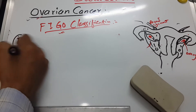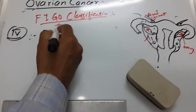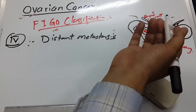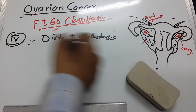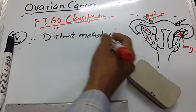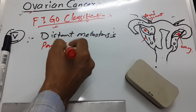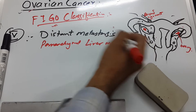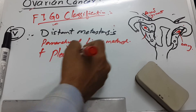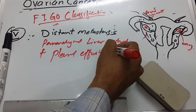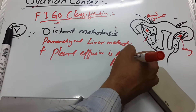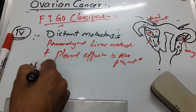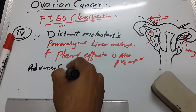Now in Stage IV there is distant metastasis — possibly to the lungs or other organs. There is also parenchymal liver metastasis and pleural effusion present. This is the fourth stage.